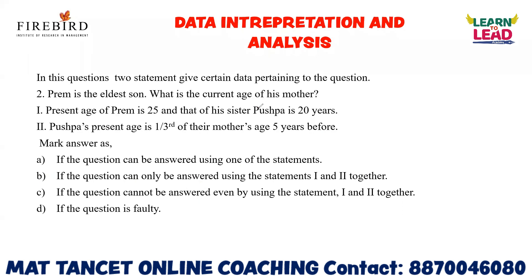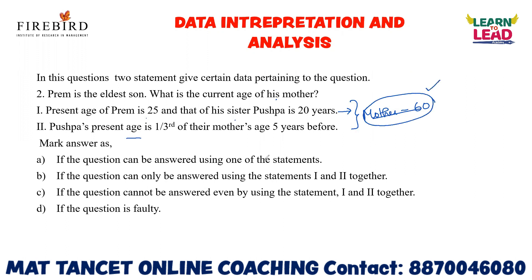Next question: Prem is the eldest son. What is the current age of his mother? Statement 1: Present age of Prem is 25 and that of his sister Pushpa is 20 years. Statement 2: Pushpa's present age is one-third of their mother's age. With statement 1 alone, I cannot answer — it only gives the ages of Prem and Pushpa. Taking statement 2, if Pushpa's age is 20, her mother's age will be 60. Only by combining both statements can I reach the conclusion. So option B is the answer.